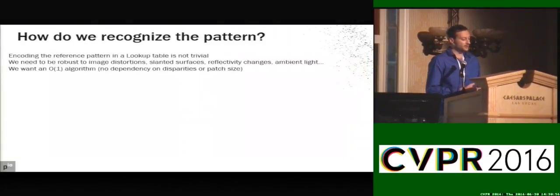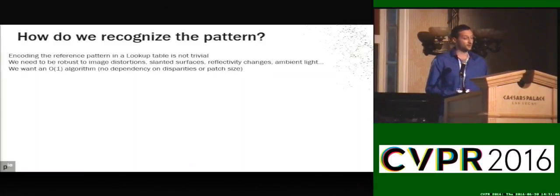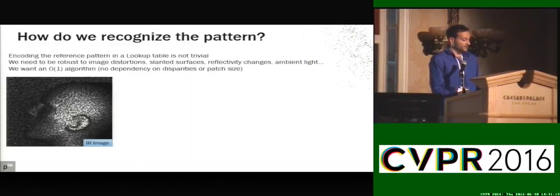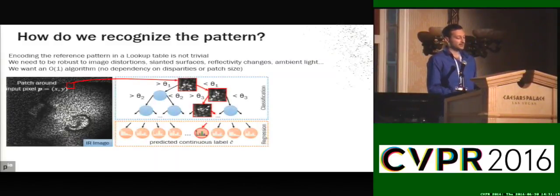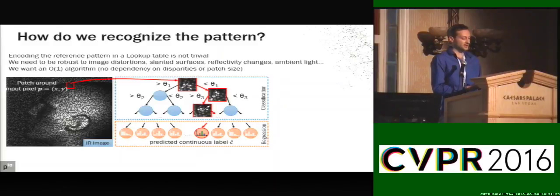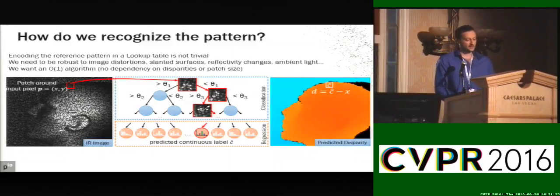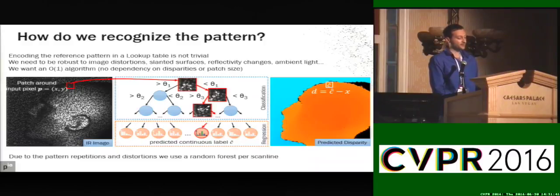The next question is how to encode this pattern, because building a lookup table is non-trivial. We also want to be robust against image distortions, slanted surfaces, and other variations, and we want an O(1) algorithm independent of patch size and number of disparities. To achieve this, given an image and a pixel, we encode the pattern in a random forest model, traversing the tree and sampling only sparse offsets — we don't look at the whole patch. At each leaf we store class labels used to infer disparities as class minus X. To further increase robustness, we use one random forest per scanline.